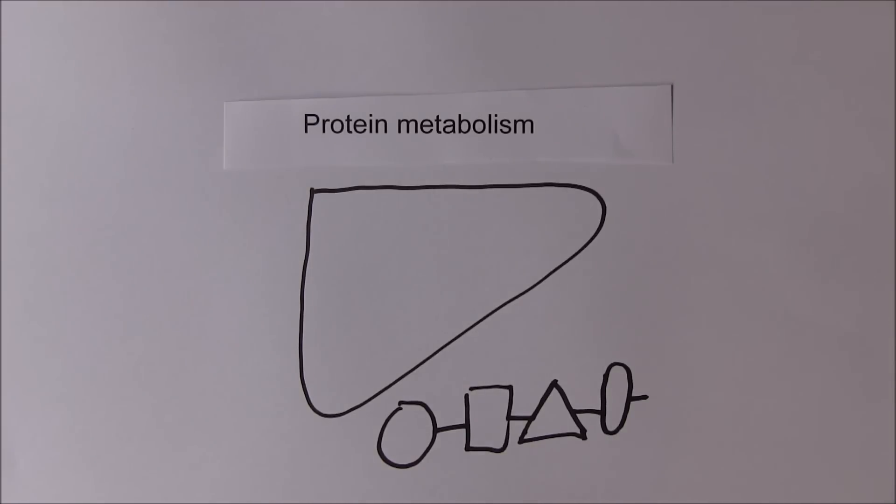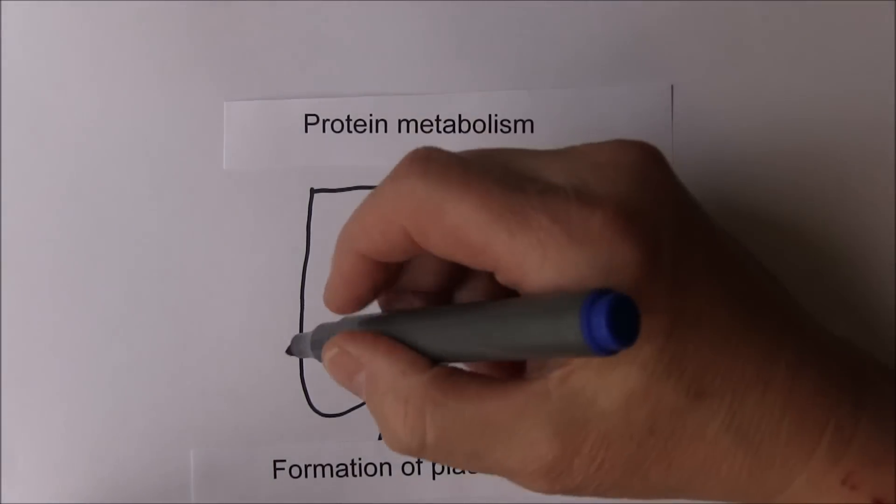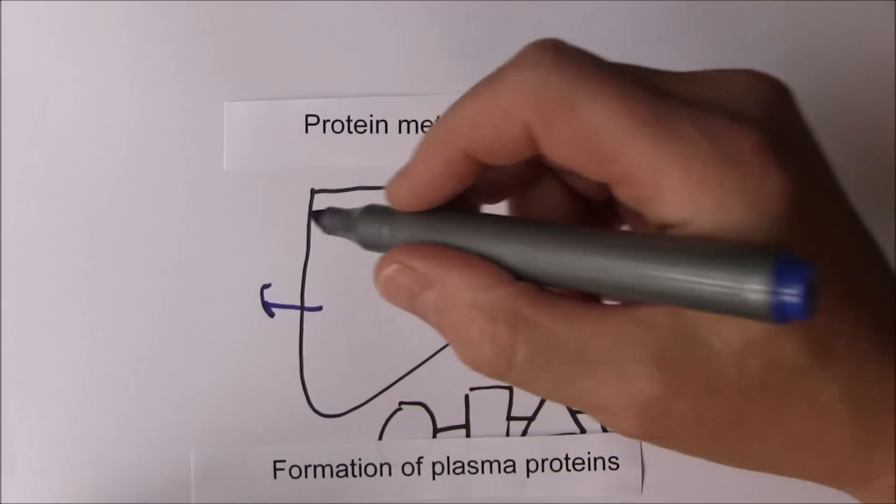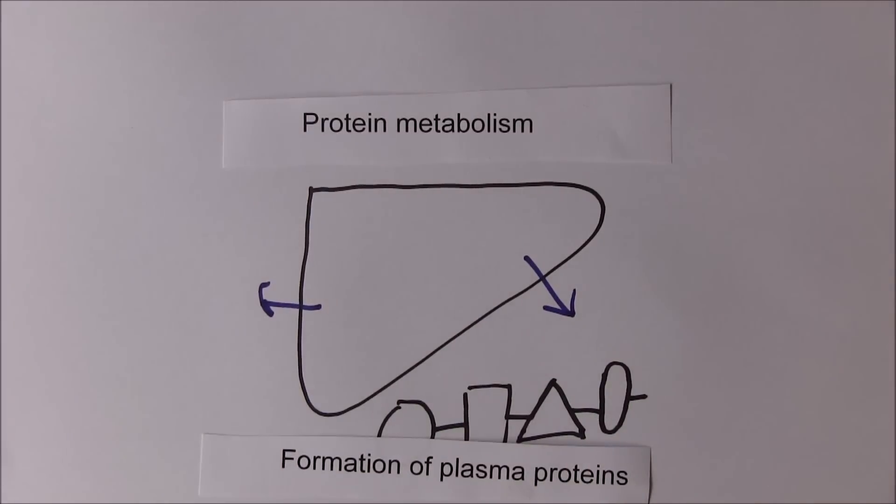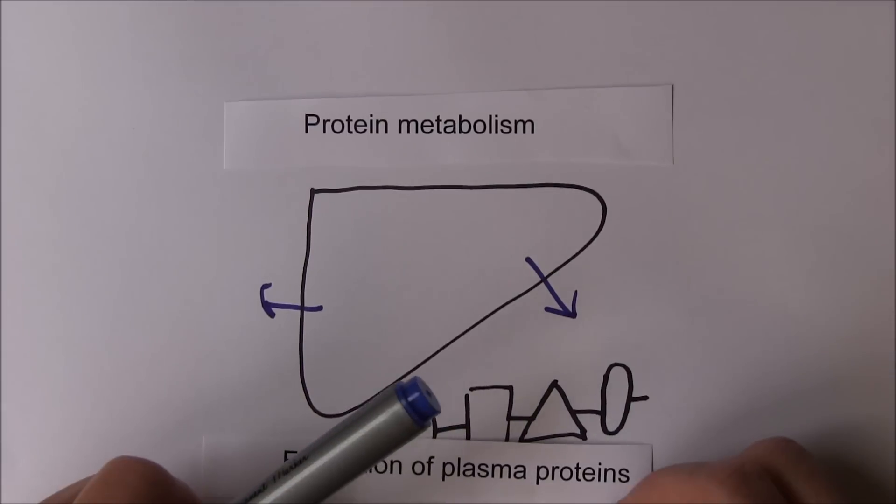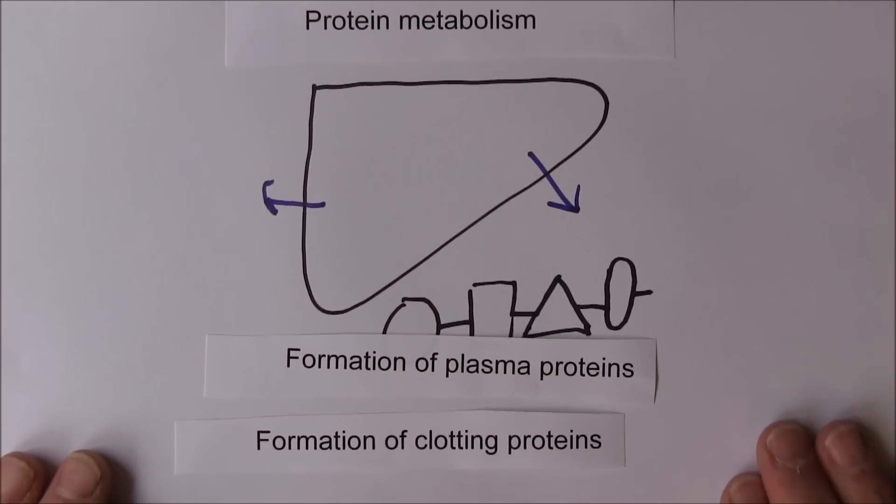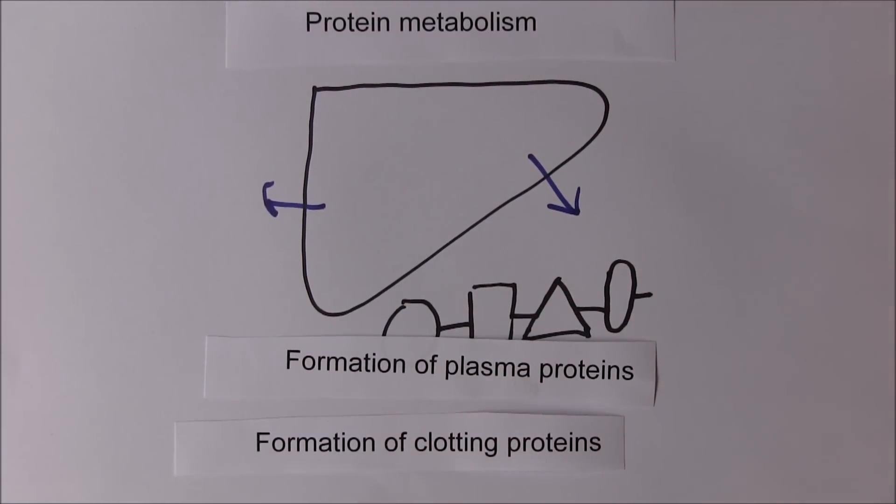Another essential function of the liver is that it forms and excretes plasma proteins. Plasma proteins are made in the liver and they are excreted into the plasma. This includes the clotting proteins - formation of plasma proteins and formation of the clotting proteins.